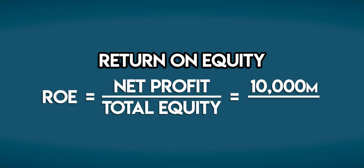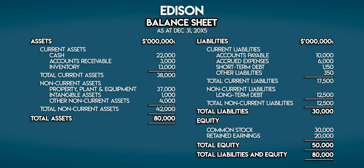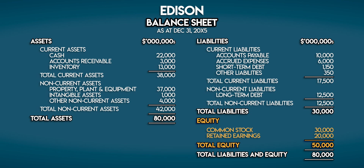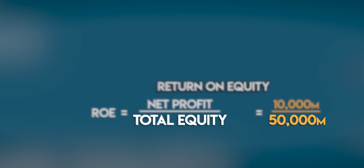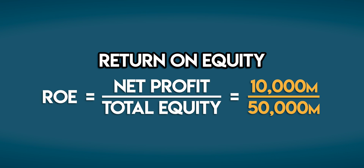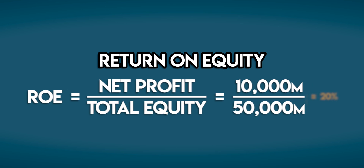We can find their total equity in the balance sheet. We look to the right side of the balance sheet, which tells us what Edison owes at a point in time. Liabilities are the stuff they owe to third parties, and on the bottom right we can see equity — this is what Edison owes to its owners. Their total equity is 50 billion dollars. So Edison's return on equity is 10 billion dollars of net profit divided by 50 billion dollars in total equity, which is 20 percent.